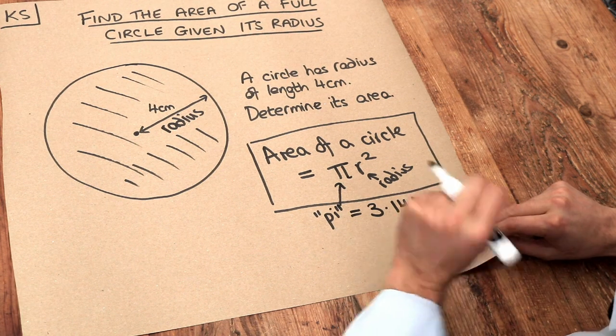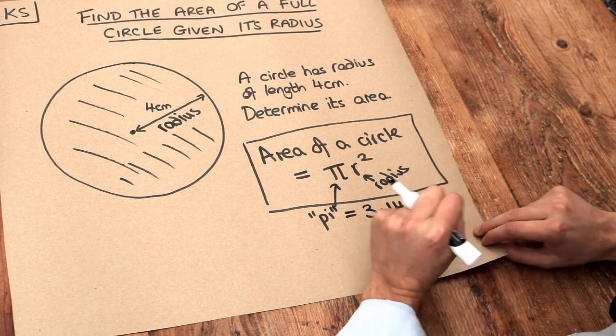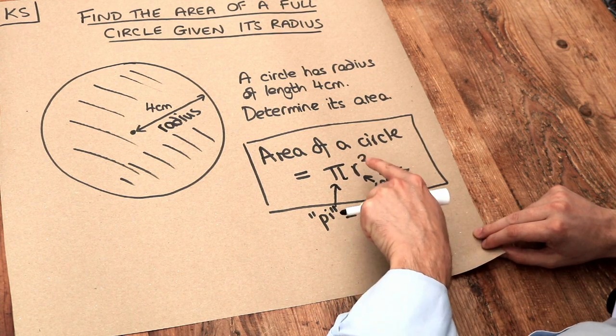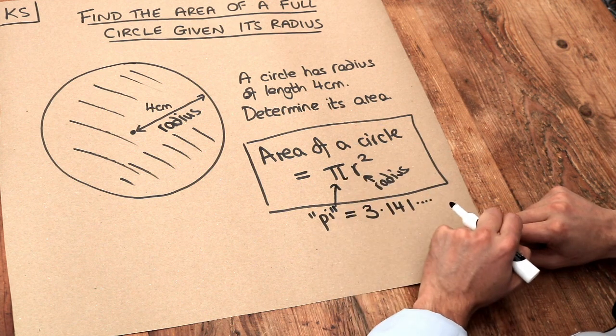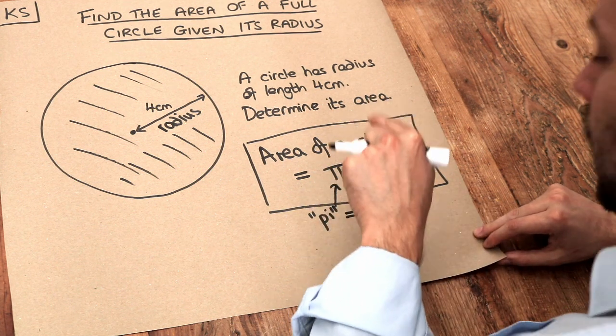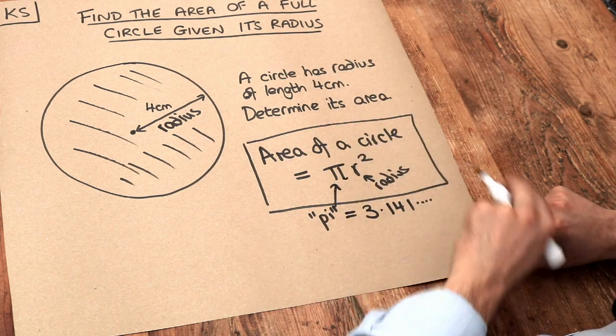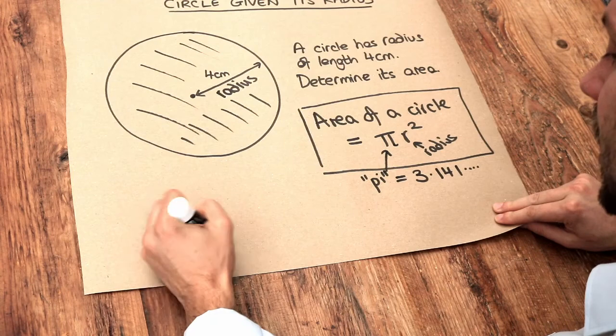And the second thing to mention is to think about BIDMAS. Remember that powers come before multiplication. So we do the r squared and then we multiply it by the pi. So it means pi lots of r squared. It doesn't mean pi r all squared. So be very careful when you do that calculation.